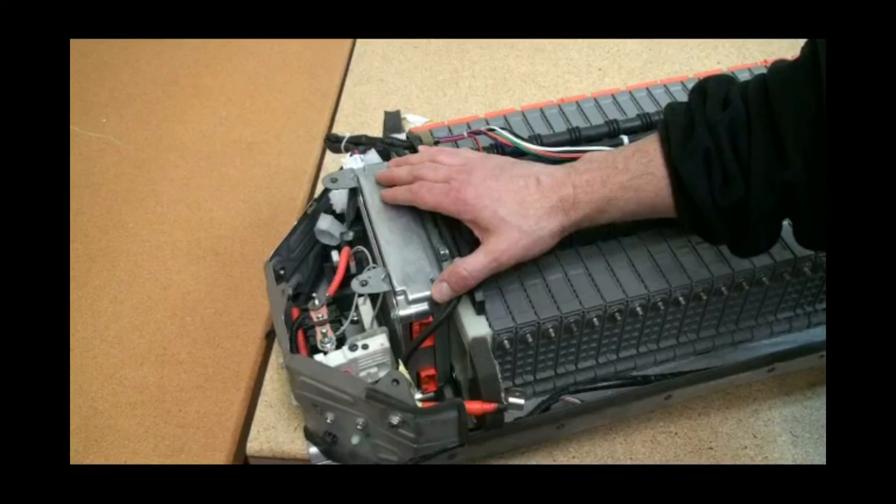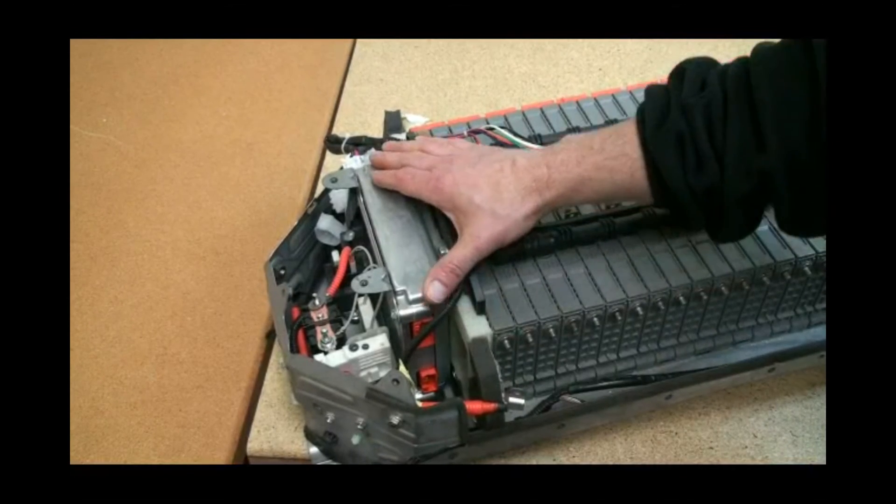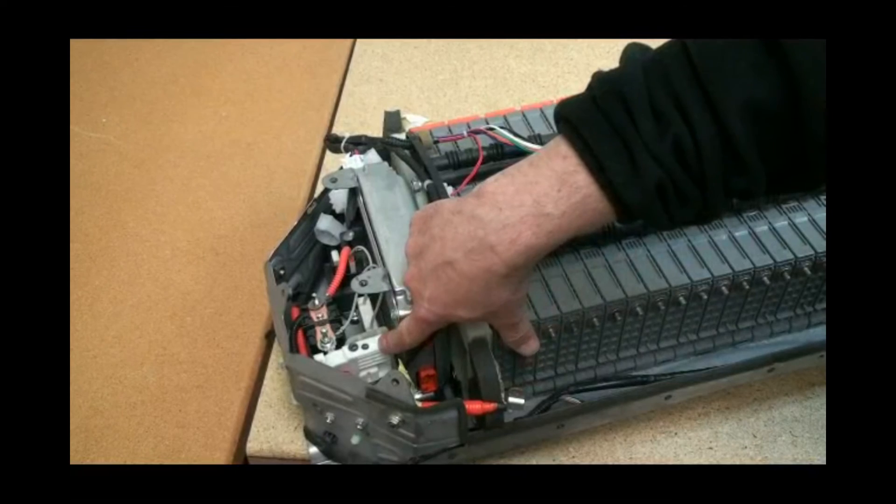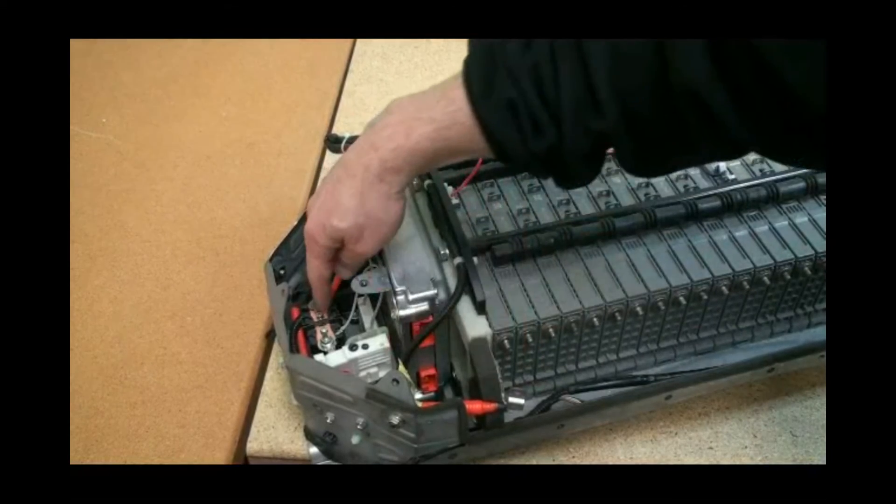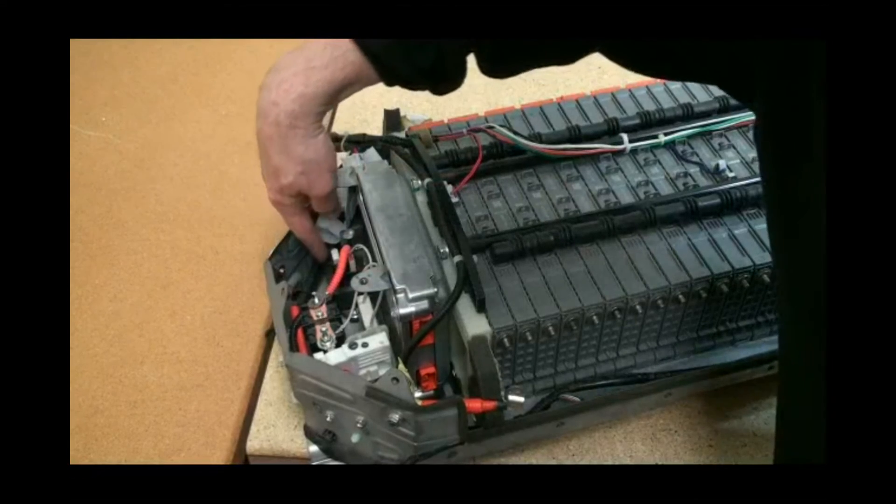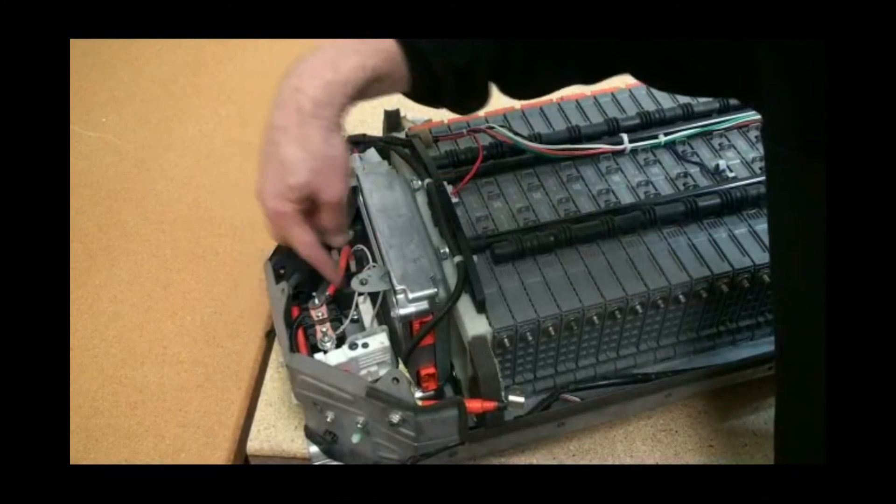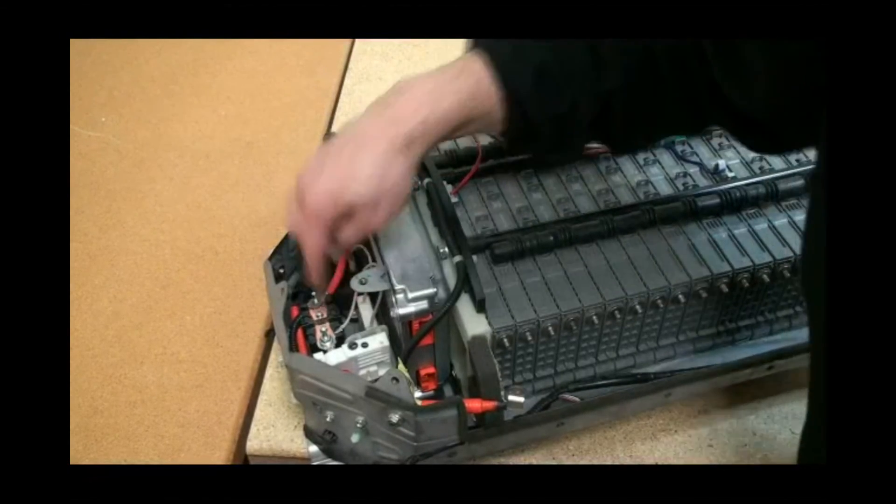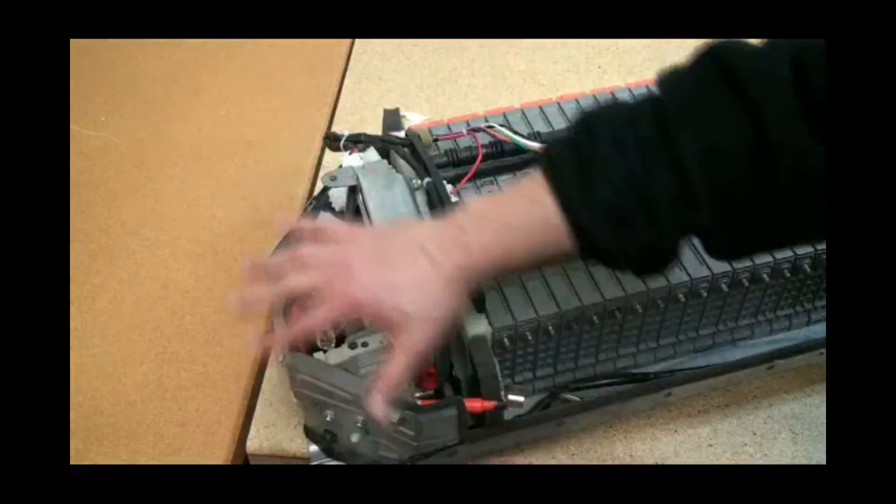In the control section, we have the battery controller, the battery current sensor, the battery positive contactor, the pre-charge relay, and the pre-charge resistor. So this makes up the control side of the battery pack.